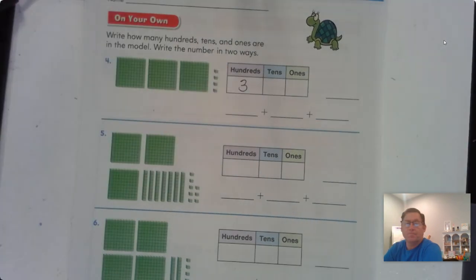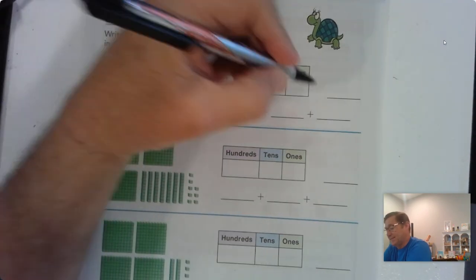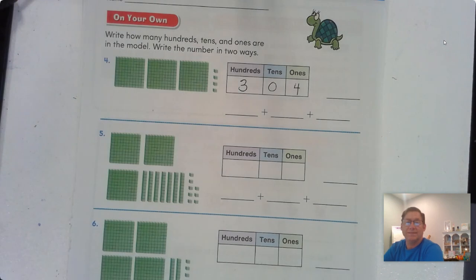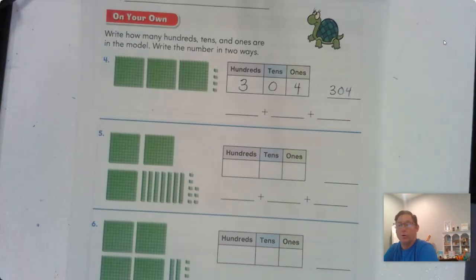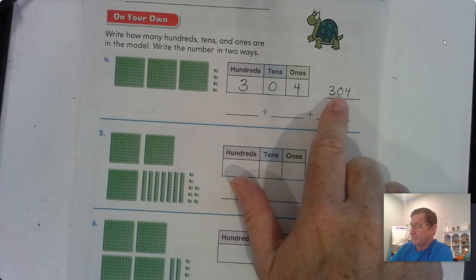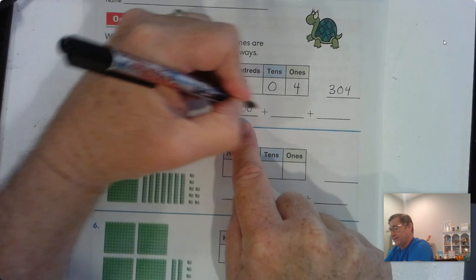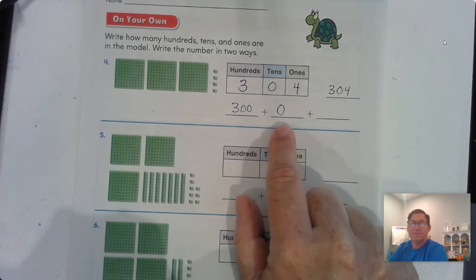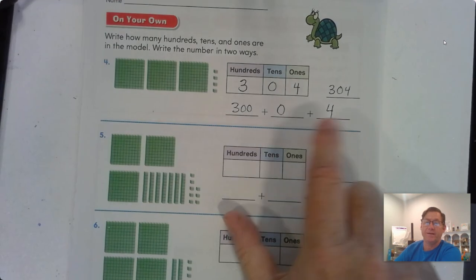Three hundreds, zero tens, and 4 ones. So we'd say this is 304. We have a zero in the tens place, so we'd have 300, zero in the tens place, and 4 ones. 304.